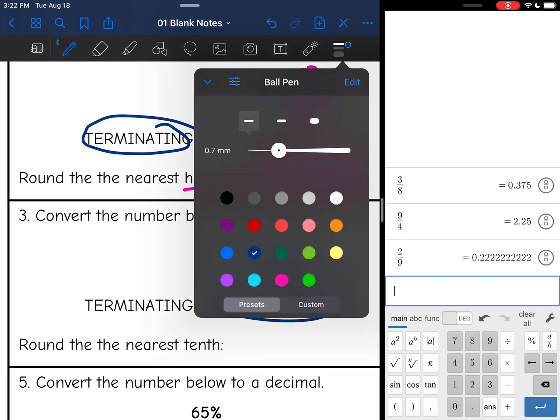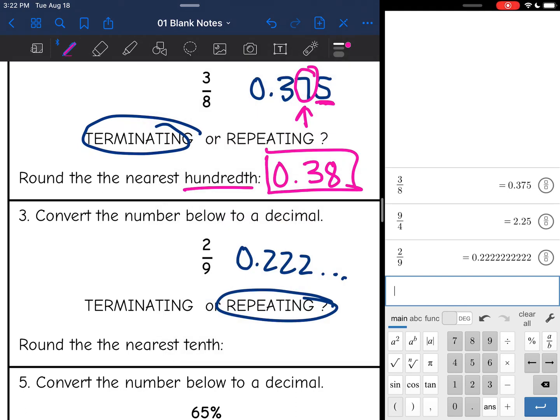And I need to round to the nearest tenth on this one. And there's a 2 after it, so it's going to stay the same. So 2 ninths rounded to the nearest tenth is 0.2.